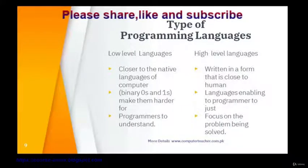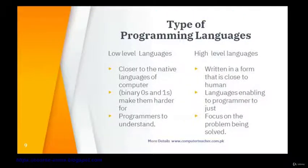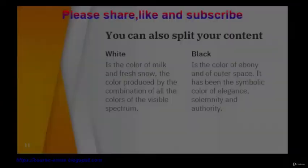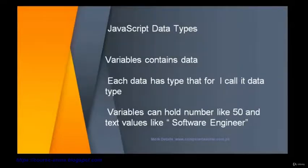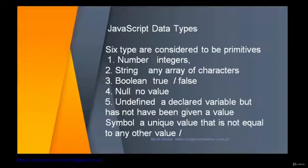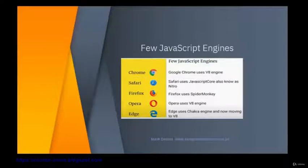Low-level language is binary — zeros and ones — and high-level language is close to human language, easy for programmers to understand. Variables contain data, and each data has a type called a data type. Data types include number, string, boolean, null, undefined, and symbol. We will also discuss the JavaScript engine, which is what browsers use to execute JavaScript.